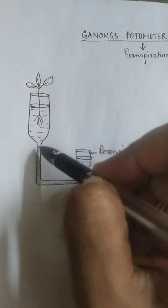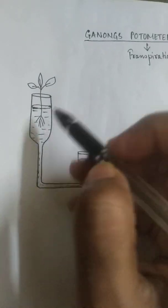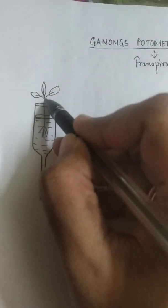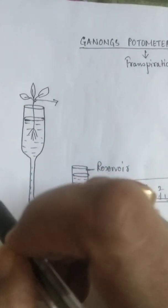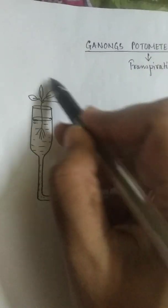And this test tube part which you can see a test tube like part. This contains a small twig inside. Suppose this is the plant whose transpiration rate I want to find out. So I will take this plant, a small twig rather.